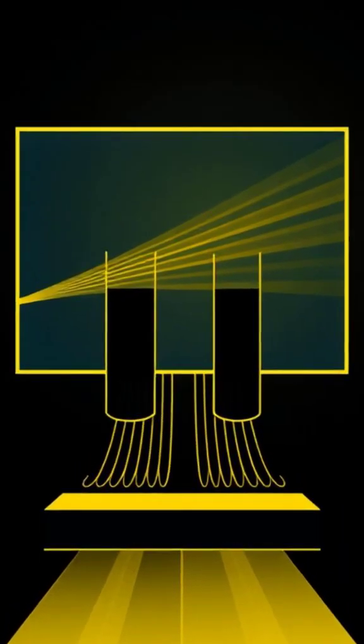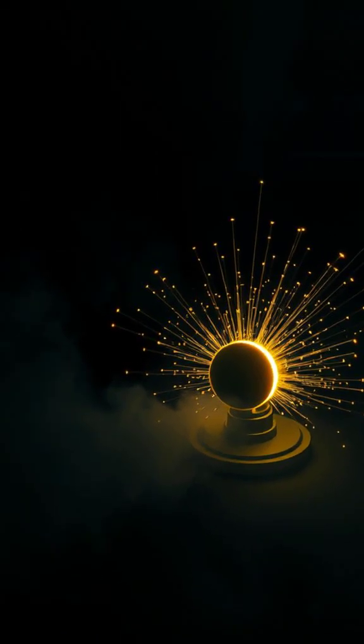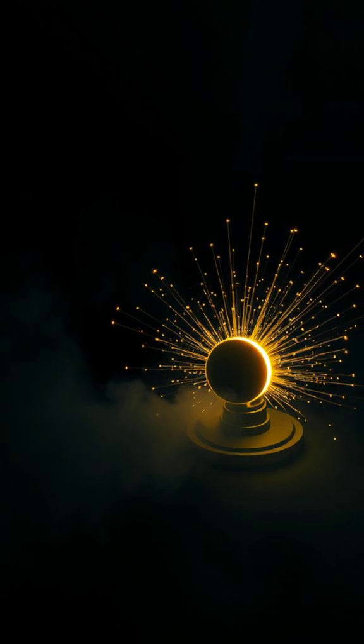Shine light through two slits? You get wave-like interference patterns. Catch individual photons? Each one behaves like a tiny particle bumping into the detector.